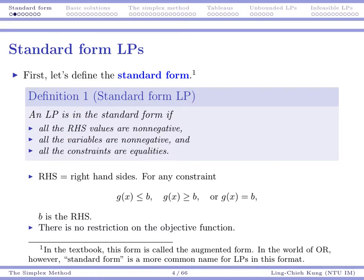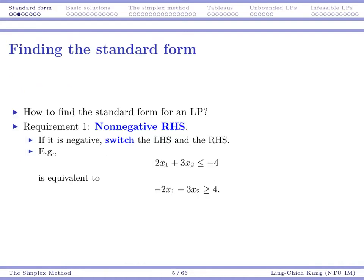Second, all variables are non-negative. Third, all constraints are equality constraints. Regarding right-hand sides: in each constraint there is a comparison operator — less than or equal to, greater than or equal to, or equality — and the value placed to the right of that operator is the right-hand-side value, which is typically a constant unrelated to your variables. All those values must be non-negative, all variables must be non-negative, and all remaining functional constraints must be equalities. There is no restriction on the objective function.